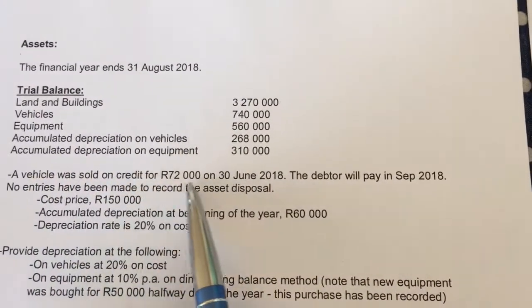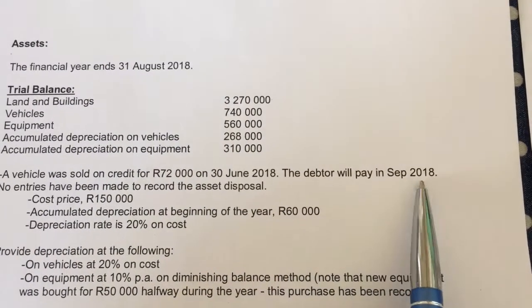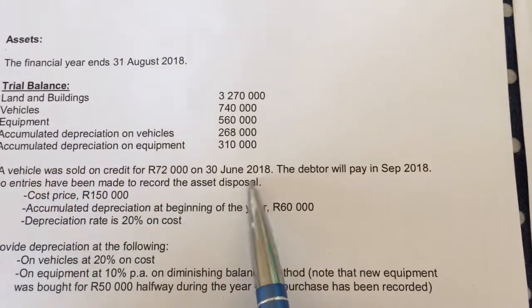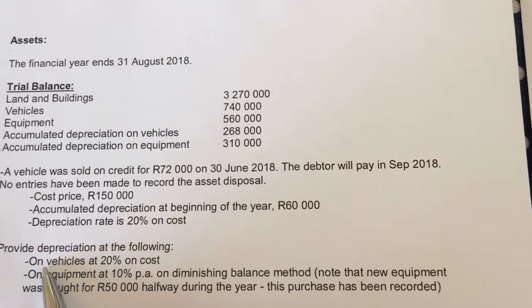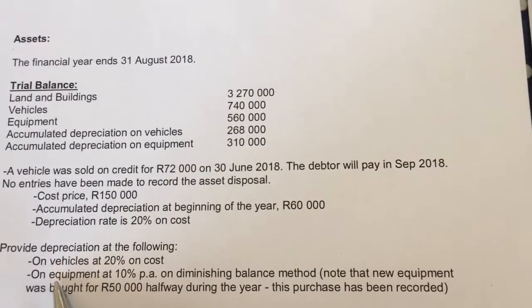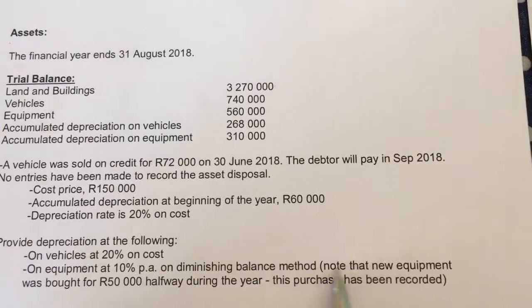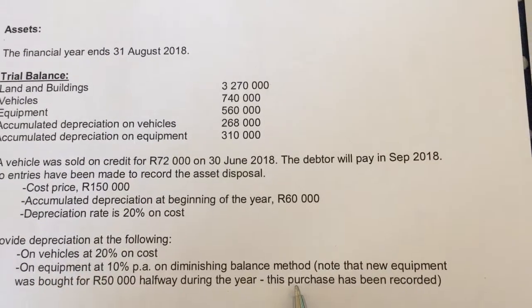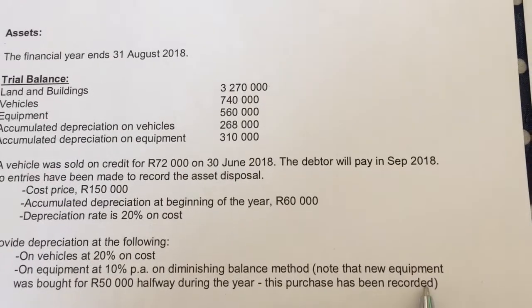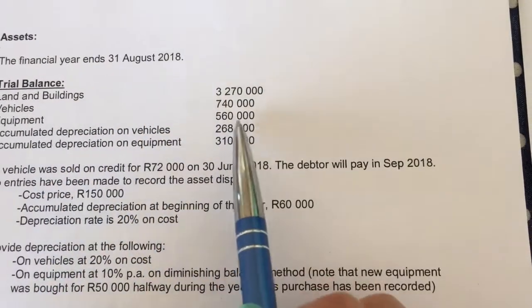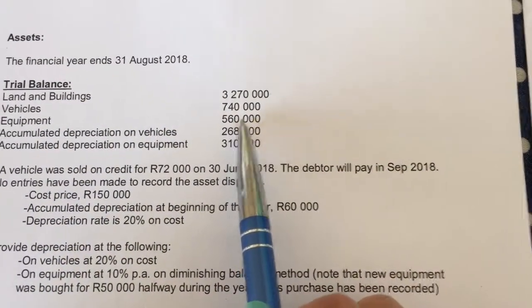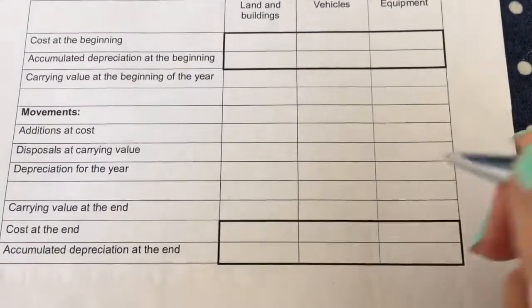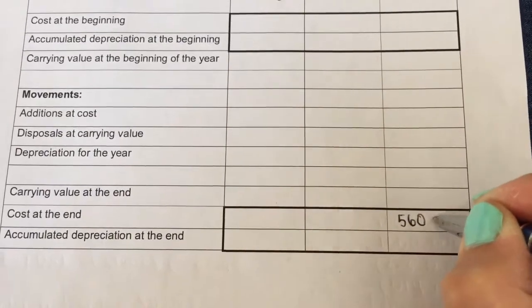A vehicle was sold on credit, the debtor will pay later on. No entries have been made so vehicles will be fine. Equipment diminishing balance method, note that new equipment was bought, this has been recorded. So my equipment amount of 560 will not be my opening balance, it will be my closing balance because they said that the new equipment was bought already.